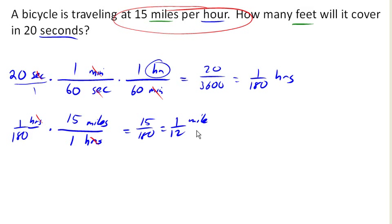And now all we need to do is convert into feet. So to do that, we're going to eliminate miles, introduce feet. And looking it up, it looks like 1 mile is 5,280 feet. And so we end up with 5,280 feet divided by 12, which is 440 feet. So in those 20 seconds, the bicycle will travel 440 feet.